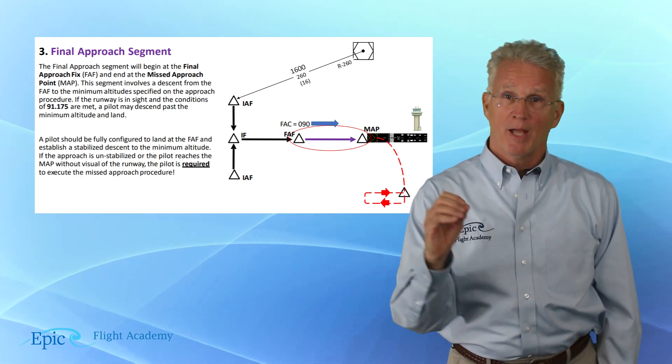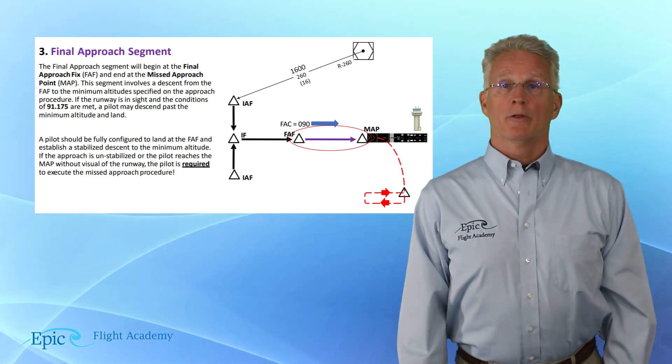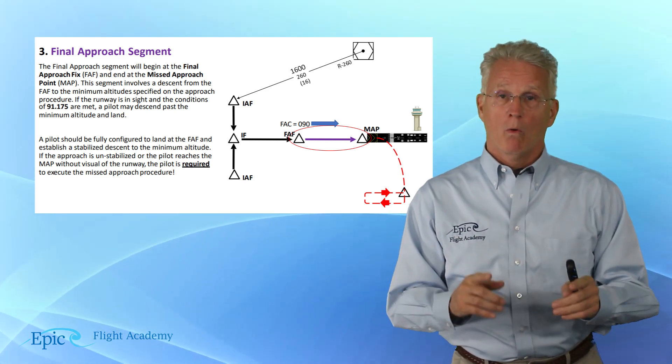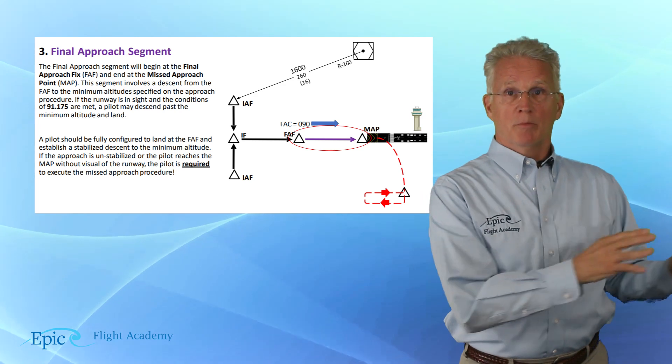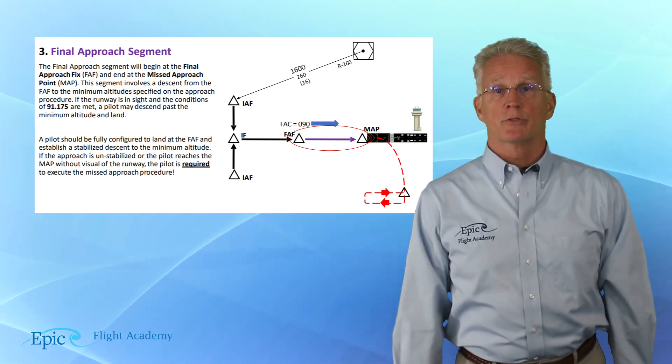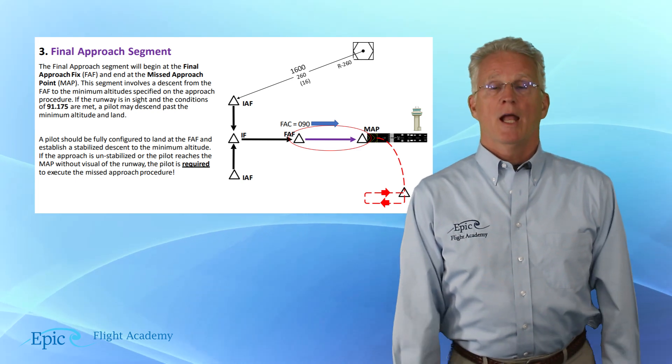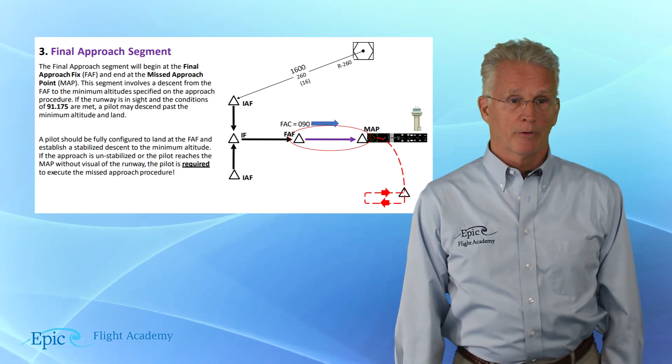Now depending upon the type of approach, that minimum altitude could either be an MDA or a DA. In other words, it could be a minimum descent altitude for a non-precision approach, or a decision altitude for a precision approach or an approach with vertical guidance.